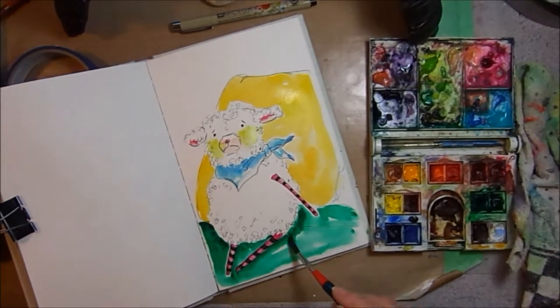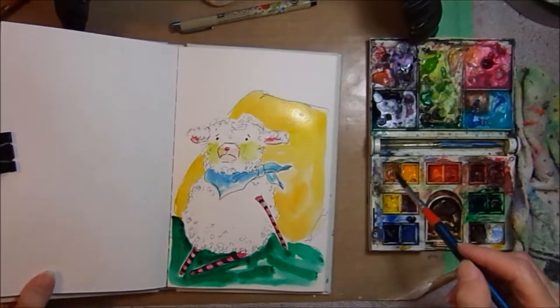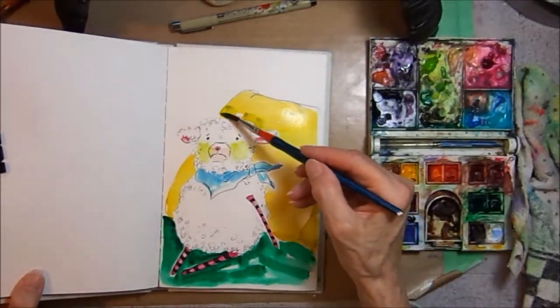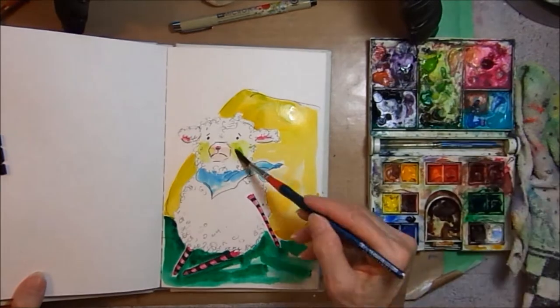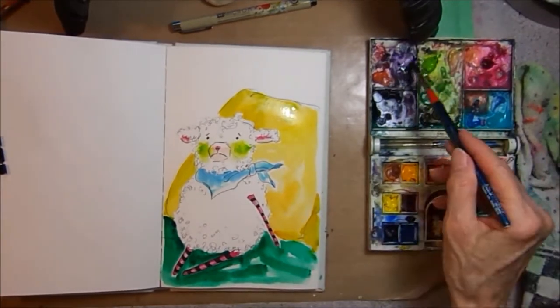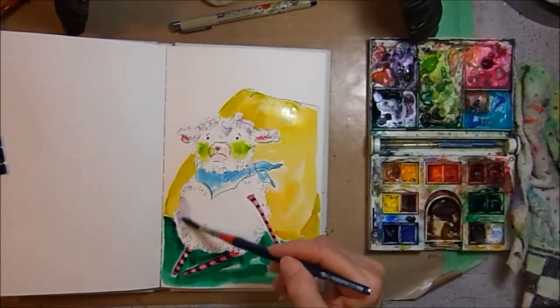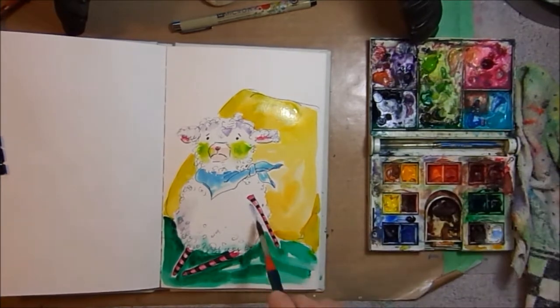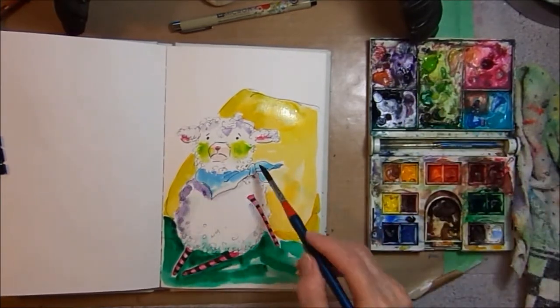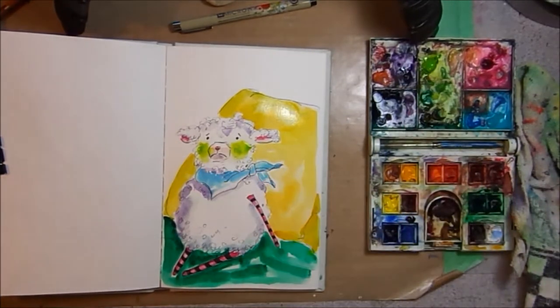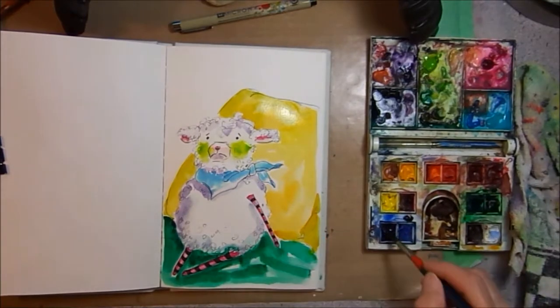I'm trying to make it a little darker underneath the lamb, a little bit of a shadow. Add a little bit of that color into the pillow on the back. A little more green on the cheeks. Then I decided to take some purple and some gray, put a little shadow around the body of the lamb, give the lamb a little more dimension.